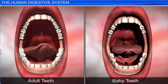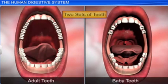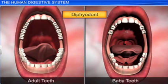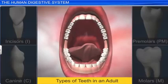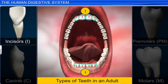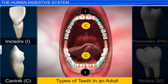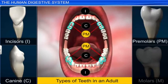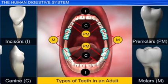Interestingly, human beings develop two sets of teeth during their lifetime, and are hence known as diphyodont. The permanent teeth in adults are of four types: incisors, represented by I; canines, represented by C; premolars and molars, represented by PM and M respectively.